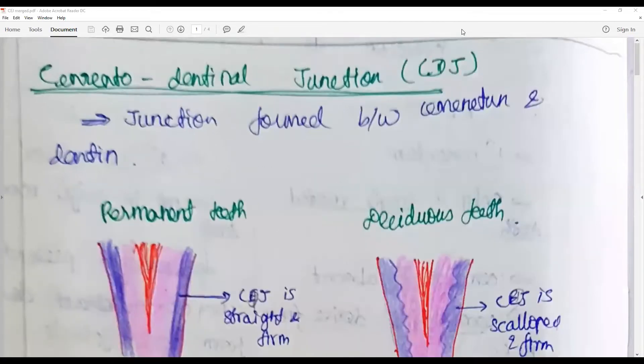Hi, hello everybody, welcome back to another session of One Question a Day. The questions that we are going to discuss today are the cemento-dentinal junction (CDJ) and the cemento-enamel junction (CEJ). Cemento-dentinal junction is formed between the cementum and dentine.